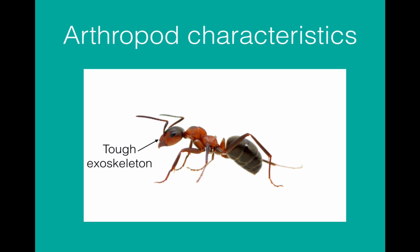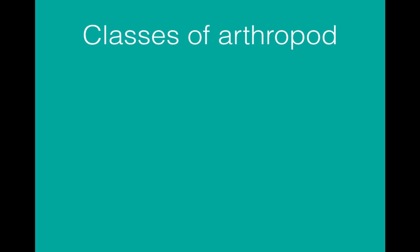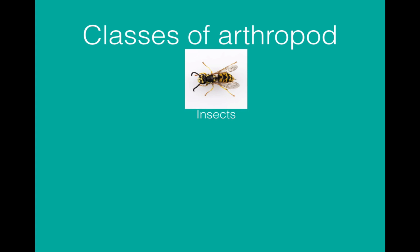They don't have a skeleton like vertebrates do. There are four classes of arthropods. We have the insects, including flies, butterflies, beetles, ants, etc.